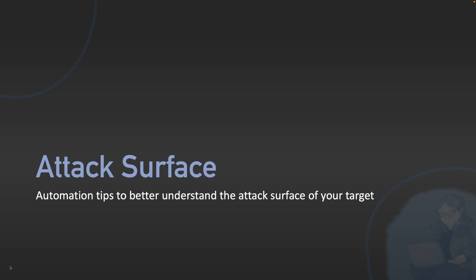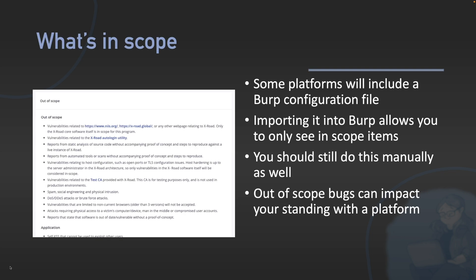So let's talk about attack surface. Here are my tips to better understand the attack surface of your target — meaning everything we can hack. The problem is we need to know what's in scope. Some platforms include a Burp configuration file; if you import it into Burp, you'll only see in-scope items. However, you should always, always manually read the scope — genuinely reading through it, really understanding what the program is actually looking for and what they're not looking for.